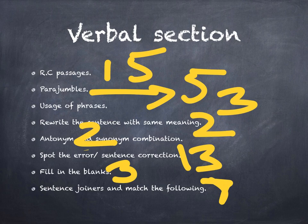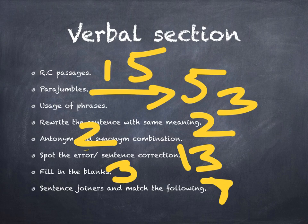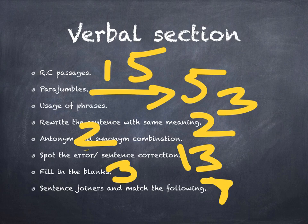People often ask how many questions will be easy or difficult. Out of 50 questions in the verbal section, at least 23 are going to be very easy, 19 are going to be of medium level — meaning if you're average in English you can solve those — and 8 questions are going to be difficult. To cross more than 40 marks in verbal you need to be good in English, but anyone who has studied a little verbal can easily score more than 25 marks out of 50.